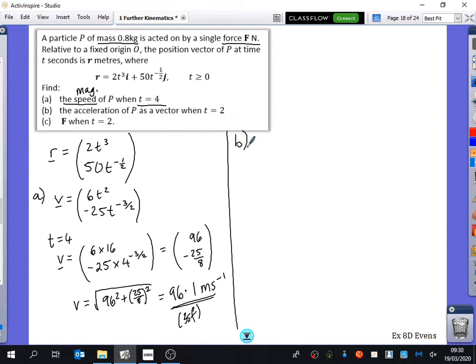Part B of the question wants us to find the acceleration and it does tell us it wants it as a vector, which is pretty good. So we know to find the acceleration, I have to differentiate the velocity. So I'm going to differentiate this thing here once more. So I'll bring the power down and reduce the power by one to get 12T. And then I'm going to bring this power down. So I've got 25 multiplied by three over two. I've ignored the negatives because they're going to cancel. So that's 75 over two T to the minus five over two. And I just want to find out the acceleration when T is equal to two. So the acceleration will be 24. And then I can either find an exact value for this or I can just go straight in and type in my calculator because it's mechanics and we end up with 6.63. There it is as a vector.